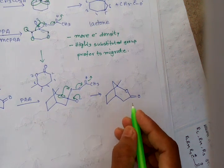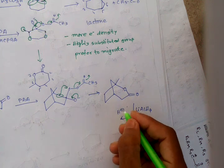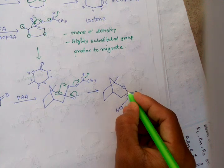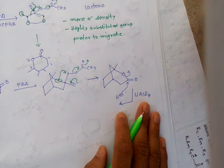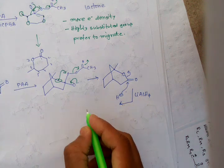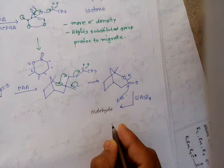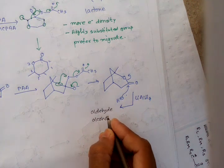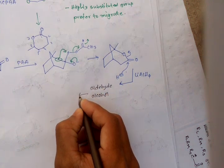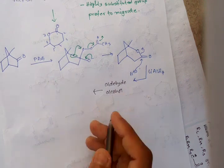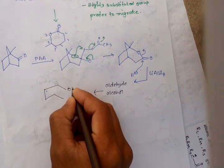Now, when the lactone is reduced with lithium aluminum hydride, hydride H− is delivered. It opens up to give an aldehyde and an alcohol. Further, the aldehyde will be reduced to an alcohol. So the final product we get is like this one.